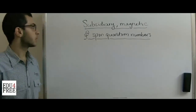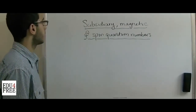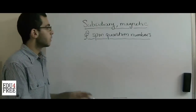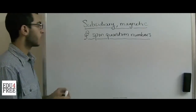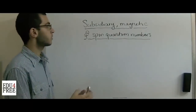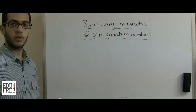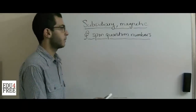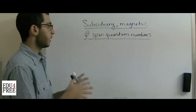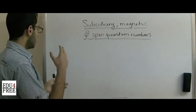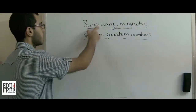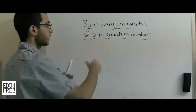Hello everybody and welcome back. Today we will talk about the rest of the three quantum numbers. Previously we talked about the principal quantum number, and we knew that this quantum number represents the number of energy levels in an atom. Each energy level contains secondary energy levels, and the number of these secondary energy levels is called the subsidiary quantum number — subsidiary means secondary.